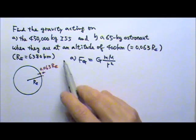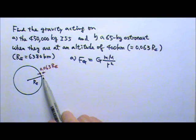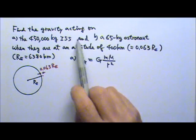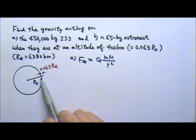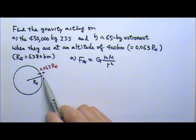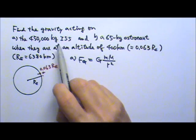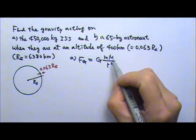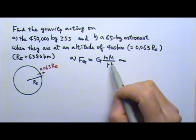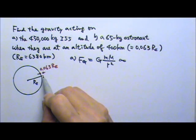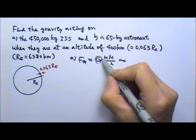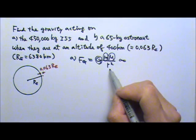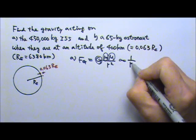To use proportion, we compare the situation at altitude to one with known values — specifically when the objects are on the surface of the Earth. When comparing these two cases, anything that doesn't change can be left out. Big G doesn't change, the mass of the ISS doesn't change, and the mass of the Earth doesn't change. The only thing changing is the distance r, so the gravitational force is proportional to 1/r².